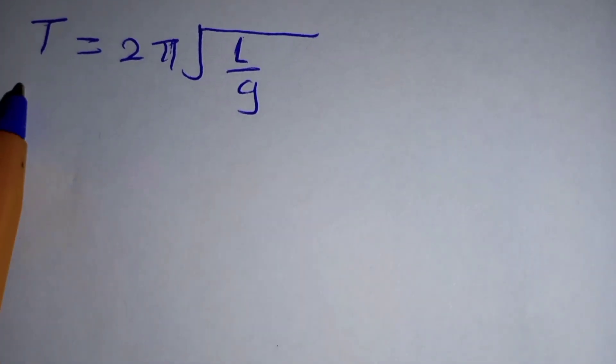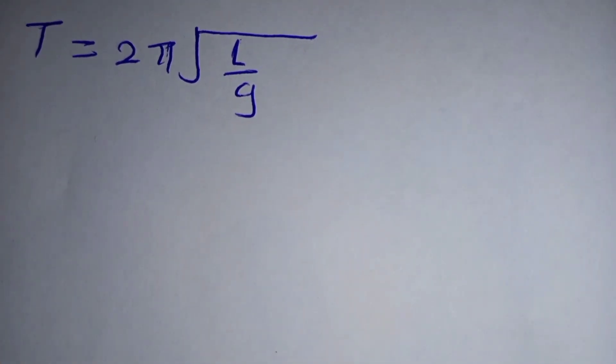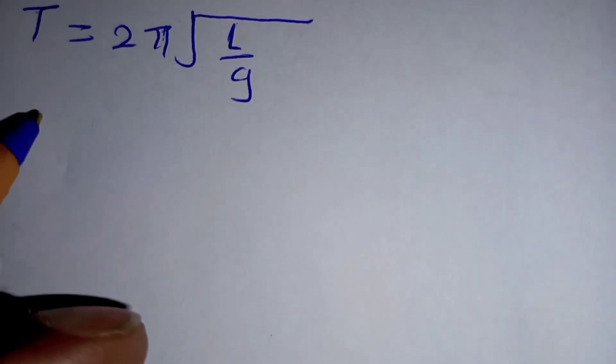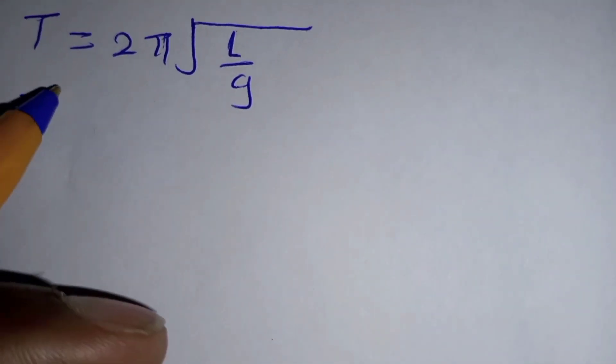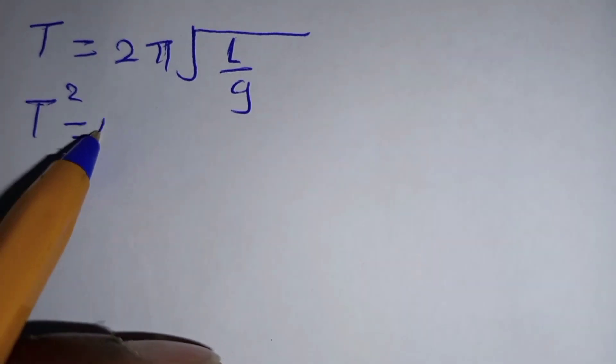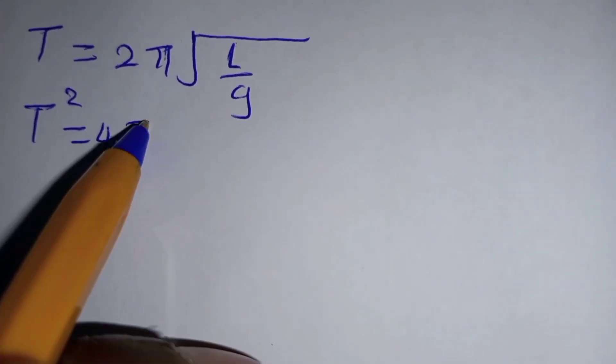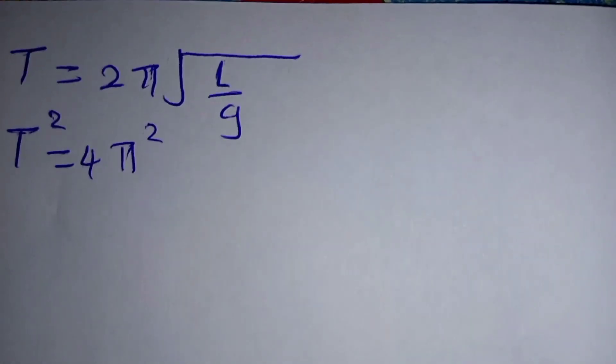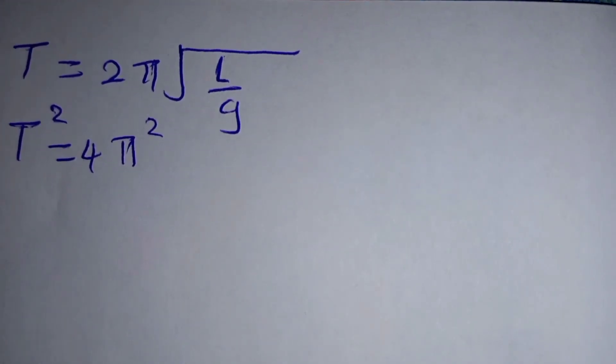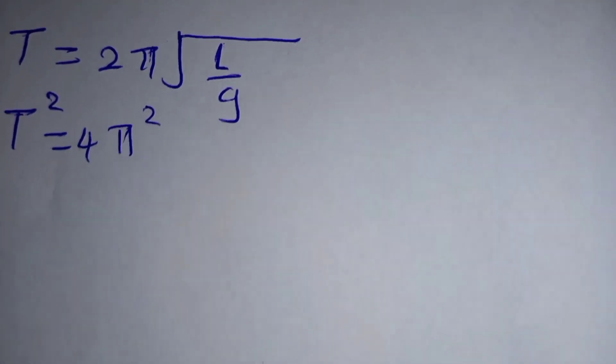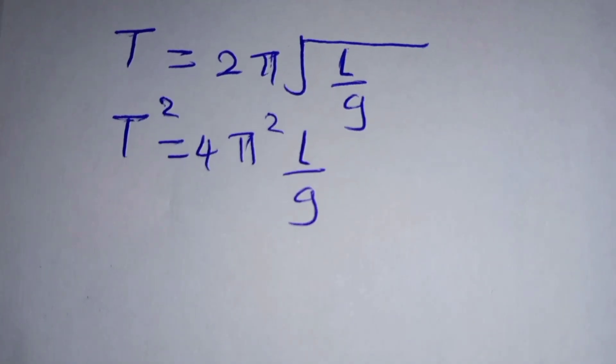To do that, first we are going to square this equation on both sides so that we obtain T² = 4π² times L/g. When you square both sides: 2² = 4, π² stays as π², and the square root of L/g squared gives L/g.